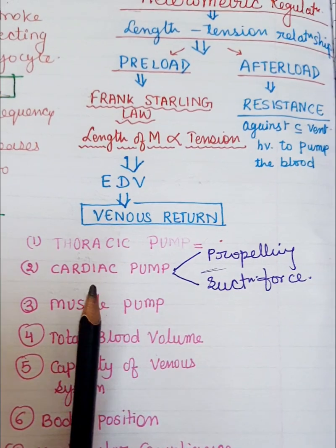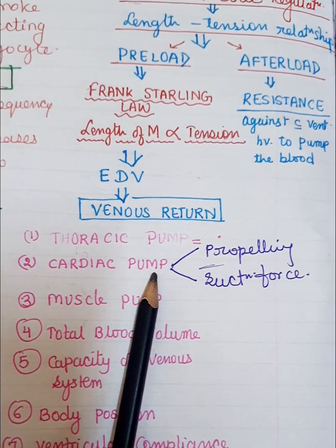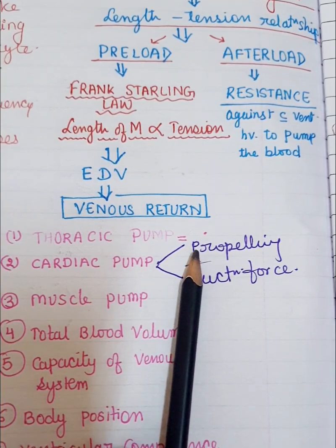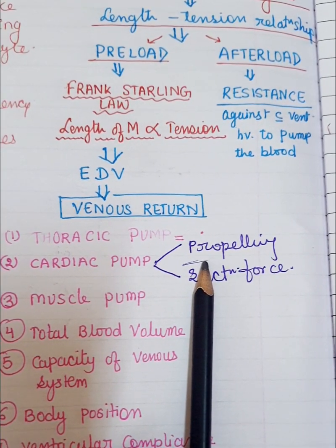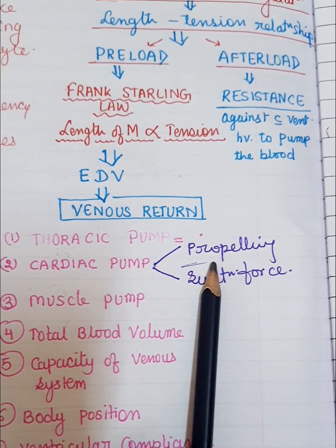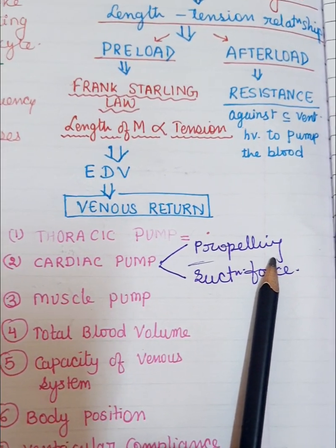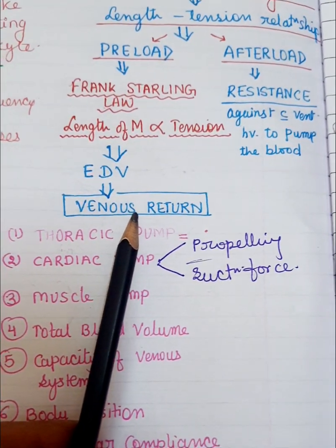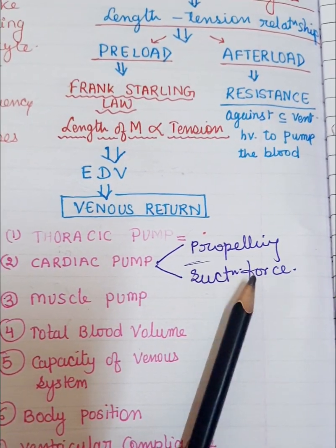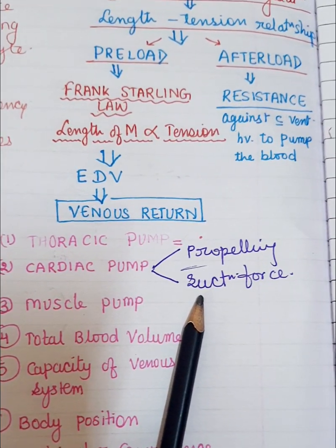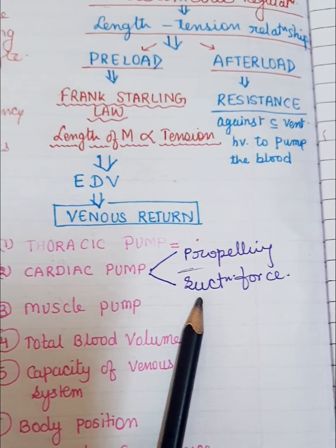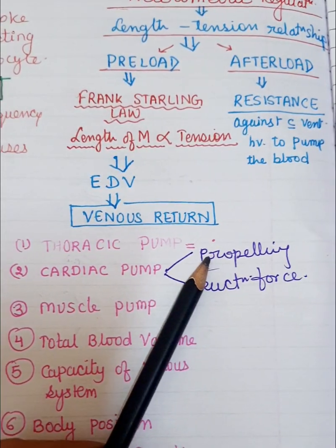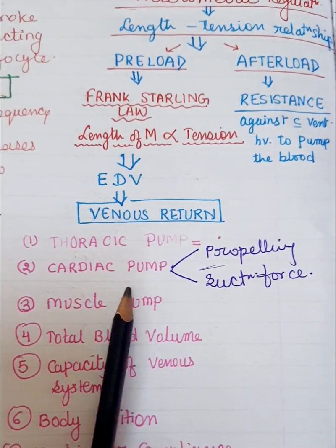The second factor is the cardiac pump. Two forces work as the cardiac pump: the propelling force and the suction force. The propelling force — during systole, ventricles contract and propel blood into the circulation, and that same volume returns through venous return. The suction force — during atrial diastole, there is less pressure within the atrium, which acts as a suction force drawing blood from the venous system. These forces ultimately cause increased venous return.